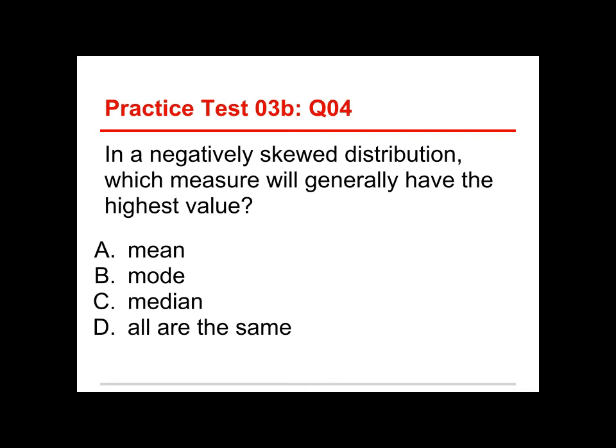All right, number four. In a negatively skewed distribution, which measure will generally have the highest value? The choices are the mean, the mode, and the median, or that they are all the same. Well, in a negatively skewed distribution, the mode is going to have the highest value, and let's take a look why.